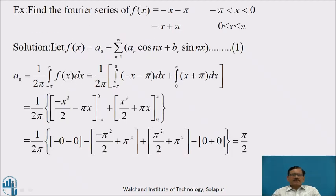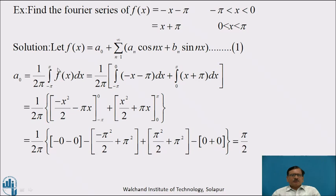Now we will see the second example: find the Fourier series of f(x) equal to minus x minus pi when minus pi is less than x less than 0, and equal to x plus pi when 0 is less than x less than pi.